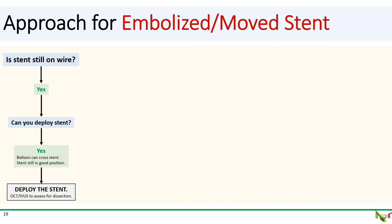This case fortunately turned out well, but stent embolization is such an unusual complication that it's helpful to have a systematic approach thought out ahead of time. When faced with an embolized stent, the first question is whether your stent is still on the wire. If yes, ask whether you can just deploy the stent where it is. If it's in a reasonable position and you can get a balloon to cross, then simply deploy the stent — which is what happened in this case. You could also consider intravascular imaging to assess sizing and possible residual dissection.